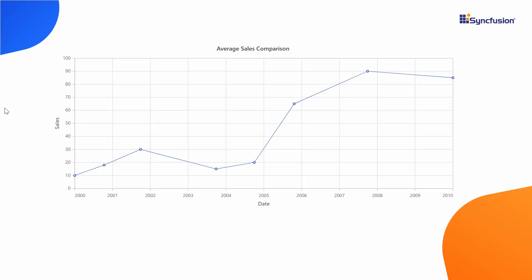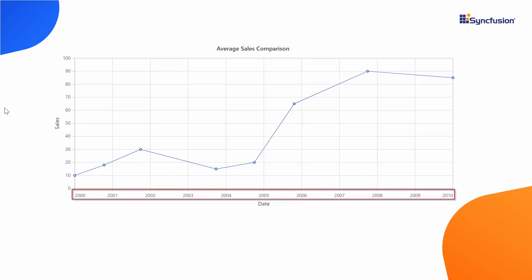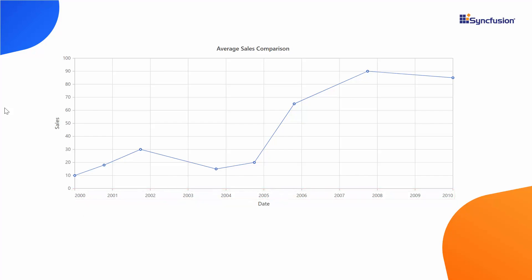Have a look at this line series chart that shows the average sales variation between the year 2000 and 2010. Here the date time labels — that is, the year labels — are displayed at the X axis by making use of the date time axis. Let me now show you how to write the code to use this date time axis in my existing getting started application.